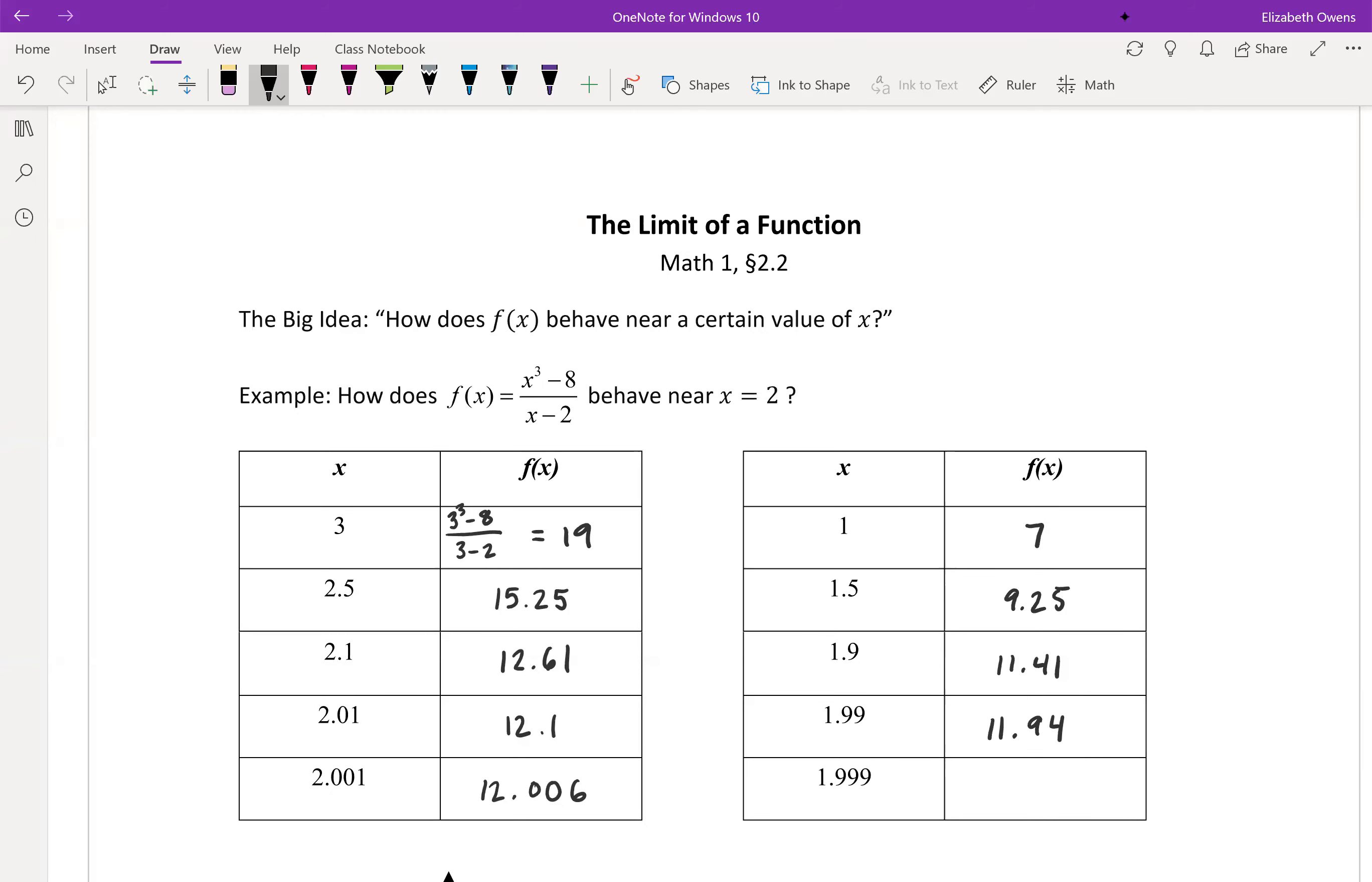Again, there might be some more decimal places after those, but that's good enough for right now. 1.999 gives us 11.994. Okay, so this is approaching 2 from values that are a little bit smaller than 2. All right, 1.999, pretty darn close to 2, but it's still a defined value for our function.